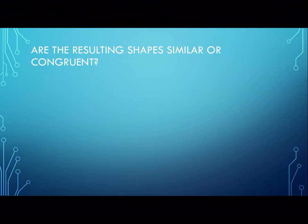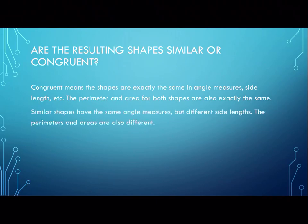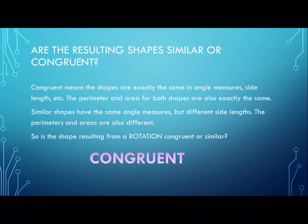Are the resulting shapes similar or congruent? Remember: congruent means the exact same shape, the exact same angle measures, the exact same side lengths, the exact same perimeter, and the exact same area — everything is identical. Similar shapes have the same angle measures but different, proportional side lengths, so their perimeters and areas differ. After we rotate a shape, it is congruent.